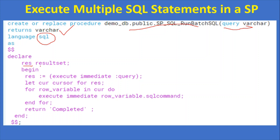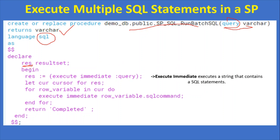In the DECLARE section, we declare a variable 'res' with data type RESULTSET. RESULTSET is a SQL data type that holds the result set of a query. Then we set 'res' equal to EXECUTE IMMEDIATE query. EXECUTE IMMEDIATE executes a string containing a SQL statement — the input string here is the 'query' parameter — and stores the results into the RESULTSET variable.